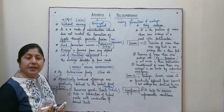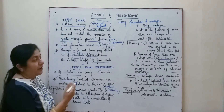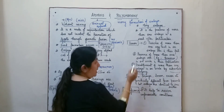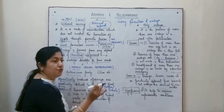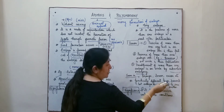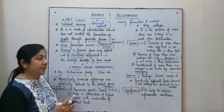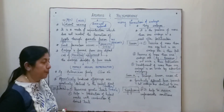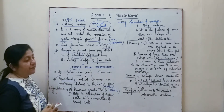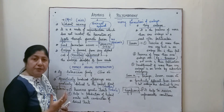Polyembryony is seen in orange, lemon, onion, etc. Since fertilization is taking place, there is a fusion of the male and female gametes. The offspring obtained are genetically different from the parents because of this fusion, but all embryos are identical to one another. The embryos will be identical to each other, but genetic differentiation from the parents will be there. This process has significance as it helps the plant to survive in favorable conditions.